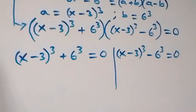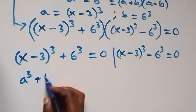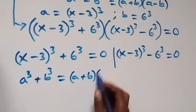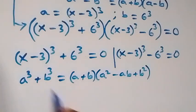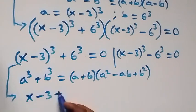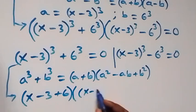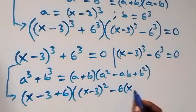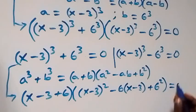Let's solve the first case. This follows from a³ + b³ = (a + b)(a² − ab + b²). So this becomes (x − 3 + 6)[(x−3)² − 6(x−3) + 6²] = 0, which gives x minus 3 equals 0 from here.